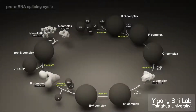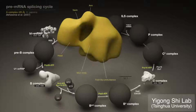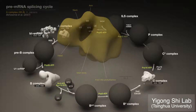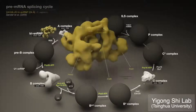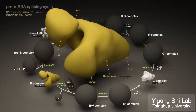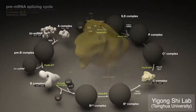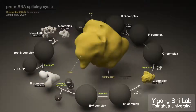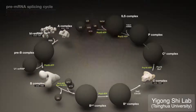Electron microscopy had partially captured the spliceosome, and only in its general overall appearance during two decades of study before 2015, made difficult by its formidable dynamic nature.